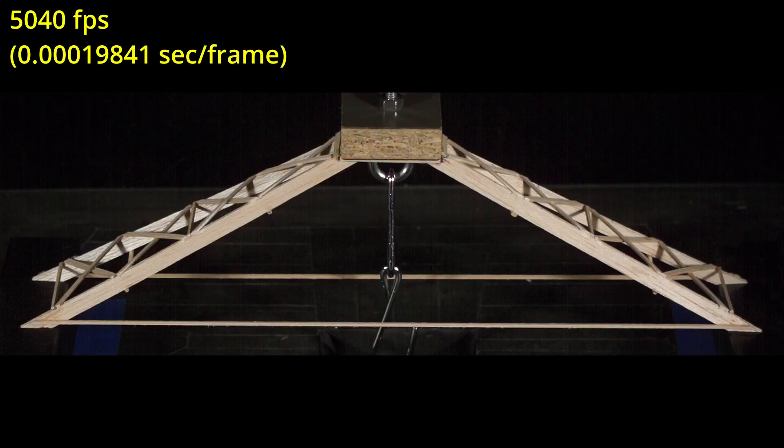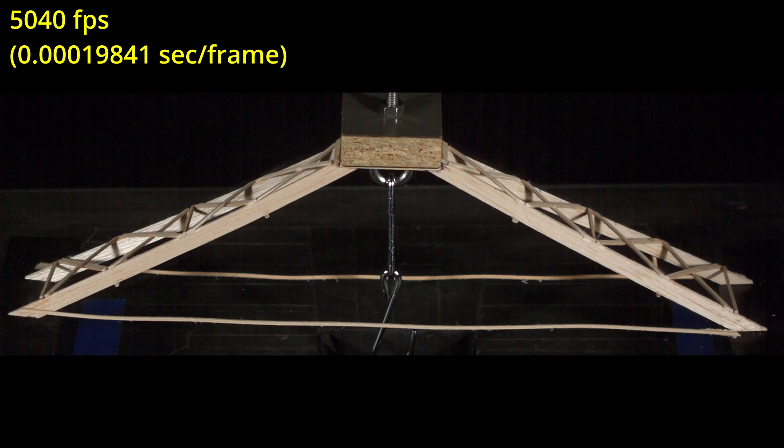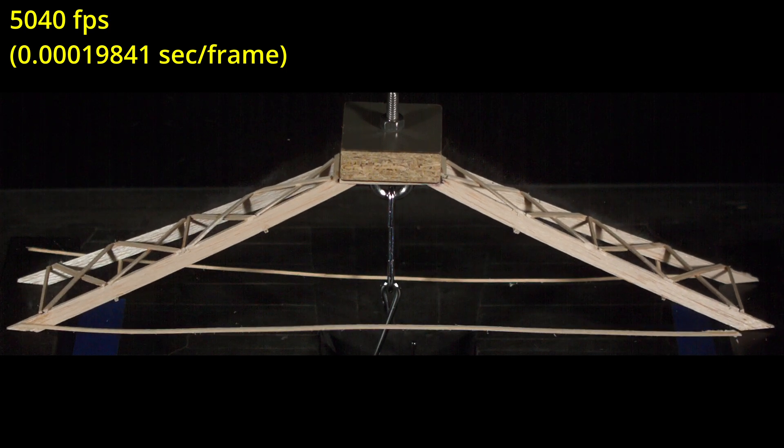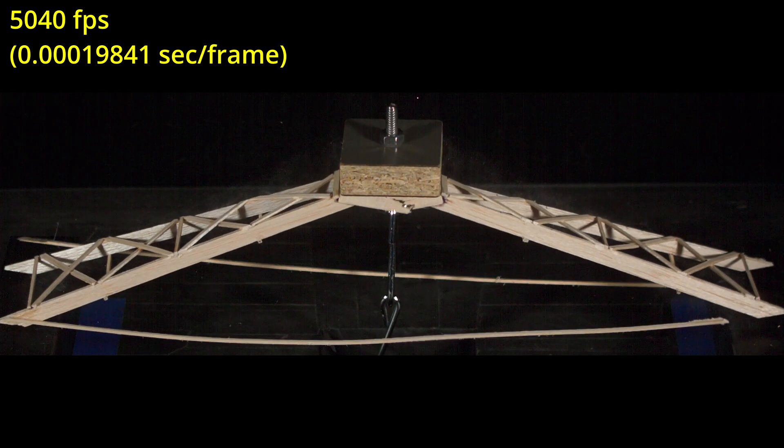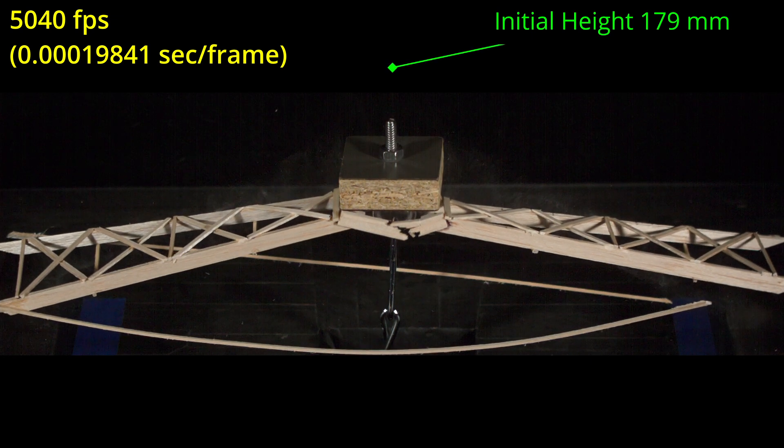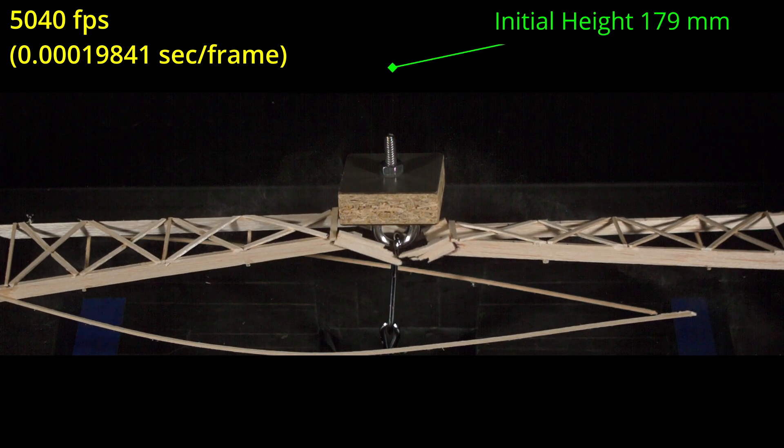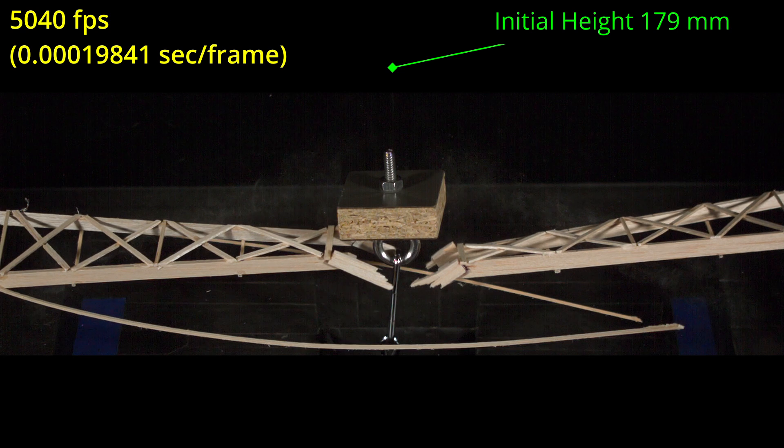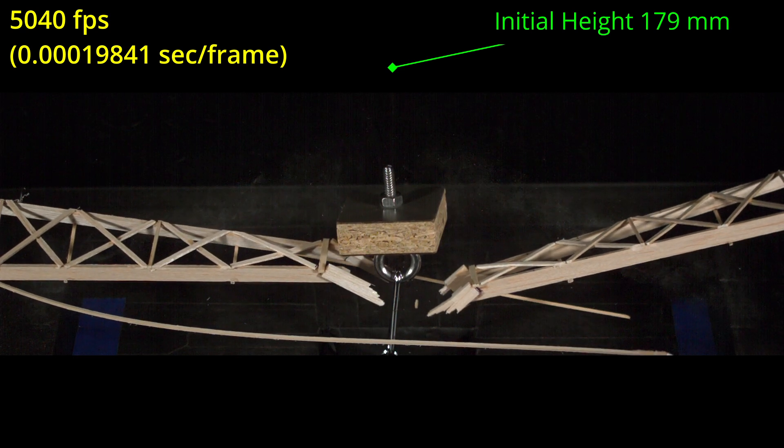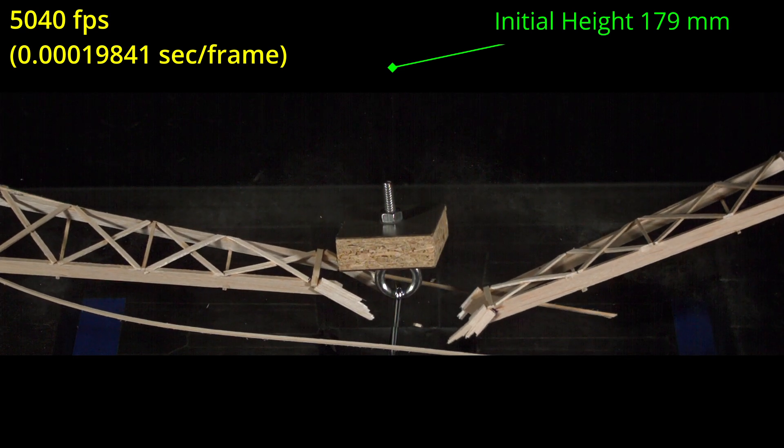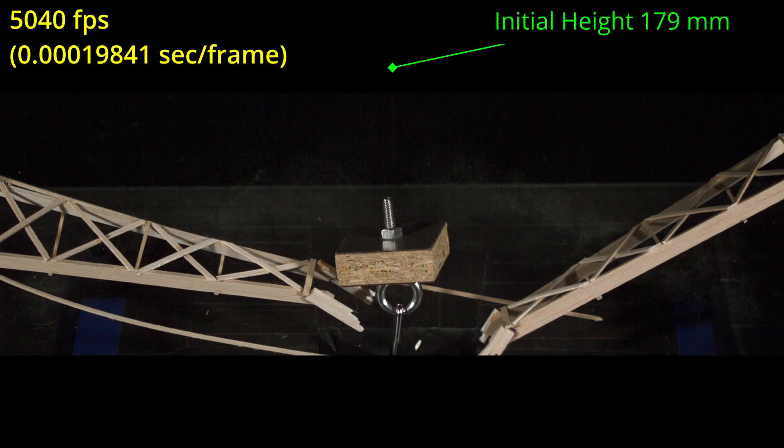If you know the starting and ending location of a point in your footage, you can also accurately compute how fast things are moving. Here I'll track the top point of the eye bolt which starts at 17.9 centimeters above the base. I'm shooting at 5040 frames per second, which lets us know exactly how long each frame takes.